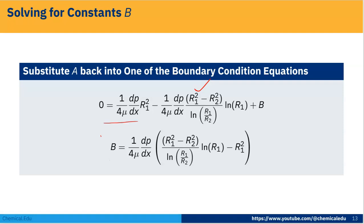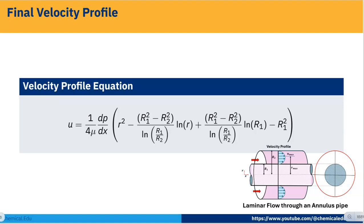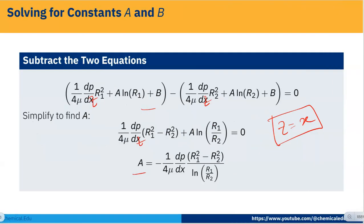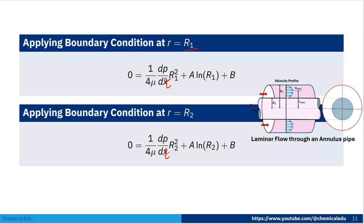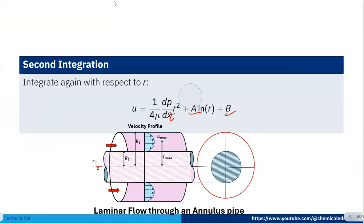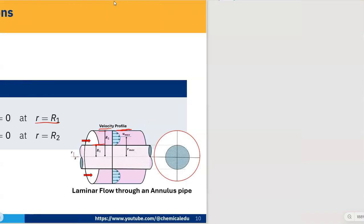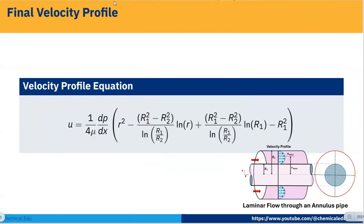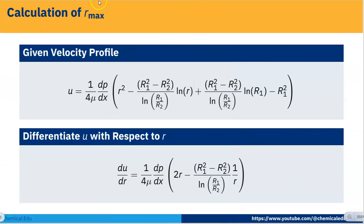After obtaining constants A and B, we substitute them back into the original general equation. The final velocity profile is expressed in terms of R1 and R2. This gives us the complete velocity profile U_Z(R) for laminar flow through the annulus.